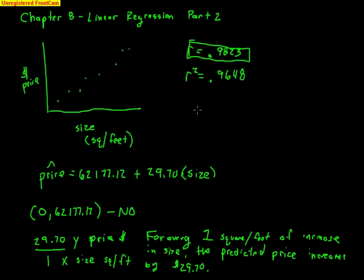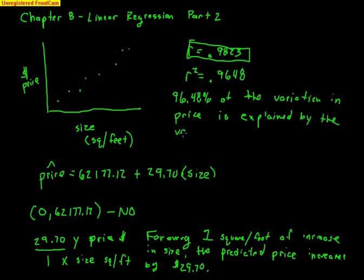It tells me that 96.48% of the variation in price is explained by the variation in size. Think about what that means. 96.48% of the different prices we saw is actually due to the difference of size.